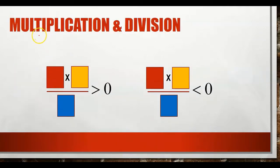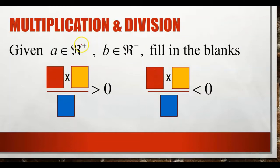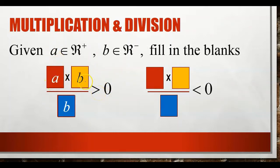If we have an operation involving both multiplication and division, we need to fill in A and B so that the statement is true. For example, A times A divided by A: positive times positive gives positive, and positive divided by positive gives positive — this is a true statement. Also, A times B divided by B: positive times negative gives negative, and negative divided by negative gives positive — also greater than 0, so true.